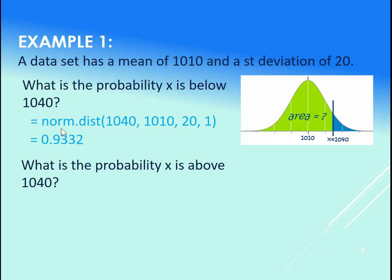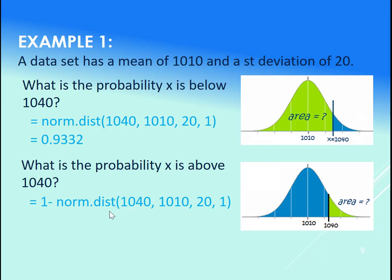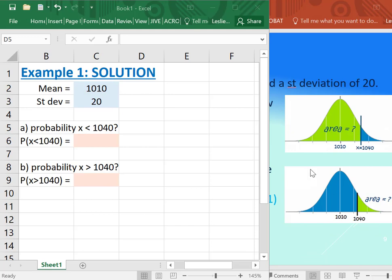And let's say we wanted the probability that x is above 1040. So again, this picture right here—we want the area to the right. To get that, we need to use a one minus norm.dist. Plug in the 1040, which is our x value, then plug in our mean, our standard deviation, and always a one. So let's go try this out in Excel.